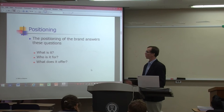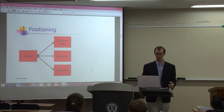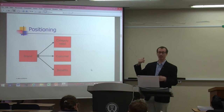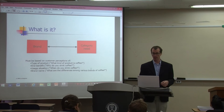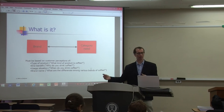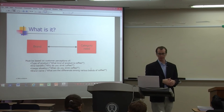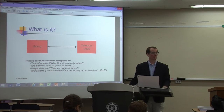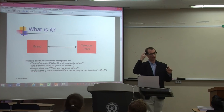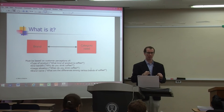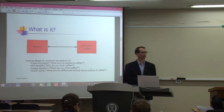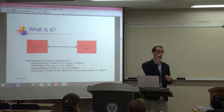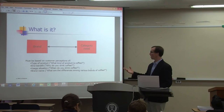The positioning brand answers these questions: What is it? Who is it for? What does it offer? With coffee, positioning could be based on the brand, a category need, the customer, or the benefits. The brand relates to the category need and vice versa — based on customer perceptions. What type of product is coffee? Is the student's idea the same as the upper-level business person's? Possibly not. With your positioning, you must think about what is the customer's perception of the type of product — not your perception.